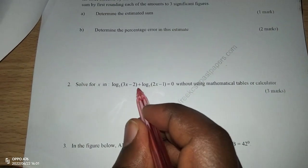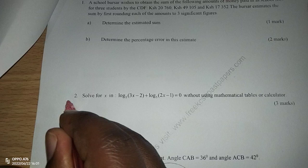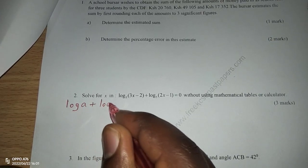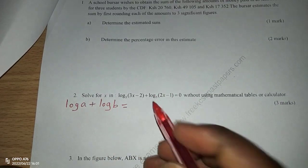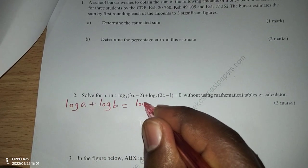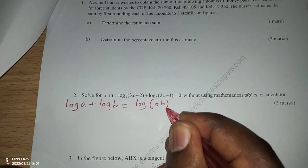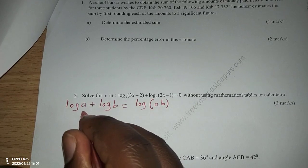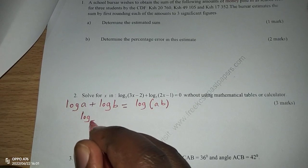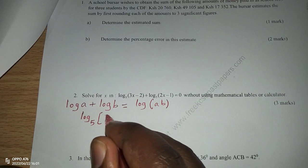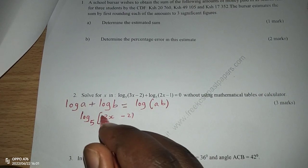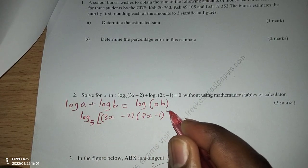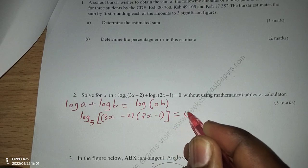So, because we have a plus here, we shall employ the law which says that when we have the logarithm of a plus the logarithm of b, this one will be solved by having the logarithm of a multiplied by b. Which means for the left hand side of the equation, then we shall have the logarithm of 3x minus 2 multiplied by 2x minus 1. This one is equal to 0.